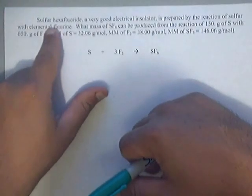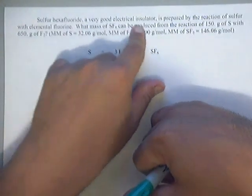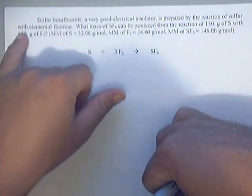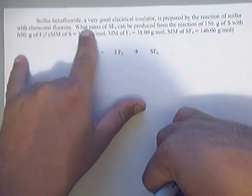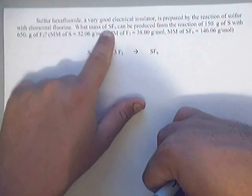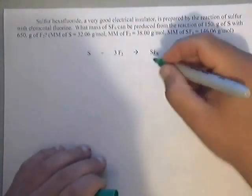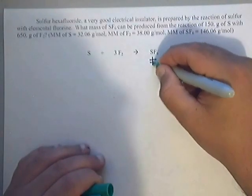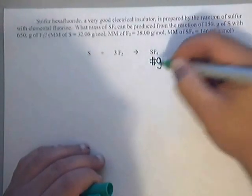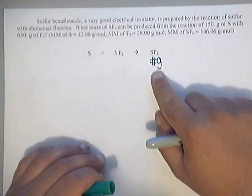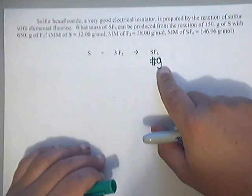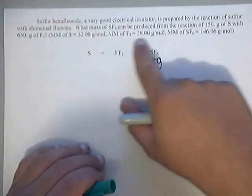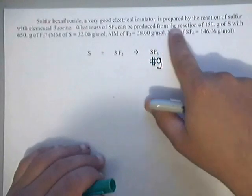Here we have sulfur hexafluoride, a very good electrical insulator. It is prepared by the reaction of sulfur with elemental fluorine and in this problem they want us to find the mass of the sulfur hexafluoride which is this one. So since they ask what mass, they want that in grams. I'll put a number sign with a G underneath the SF6 to basically let me know that this is the direction that I'm heading in.